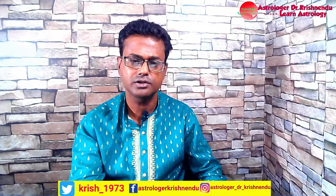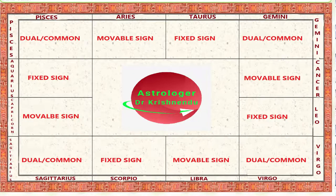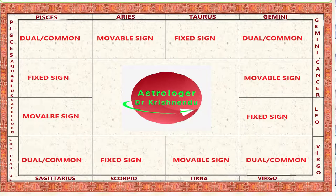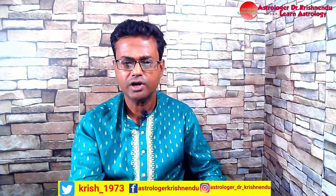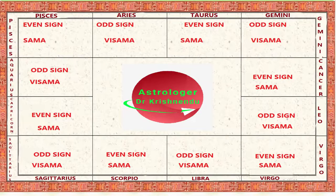Now let's see about the movable, fixed, and dual nature signs. Dual nature signs are also called common signs. Aries, Cancer, Libra, and Capricorn are the movable signs of the zodiac. Taurus, Leo, Scorpio, and Aquarius are fixed signs. Gemini, Virgo, Sagittarius, and Pisces are dual nature or common signs. Male zodiac signs are called odd zodiac signs and female zodiac signs are called even signs.